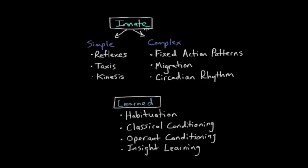Learned behaviors, on the other hand, are behaviors that are learned through experience. I've already written down some of the most common types of innate and learned behaviors. When it comes to innate behaviors, I split them up into what I consider simple behaviors versus complex behaviors. The three types of simple innate behaviors are reflexes, taxis, and kinesis.